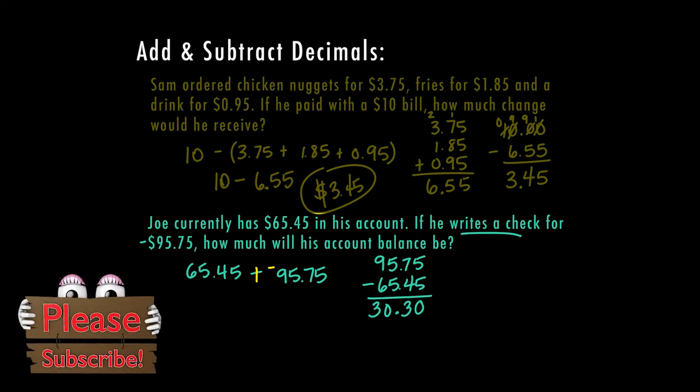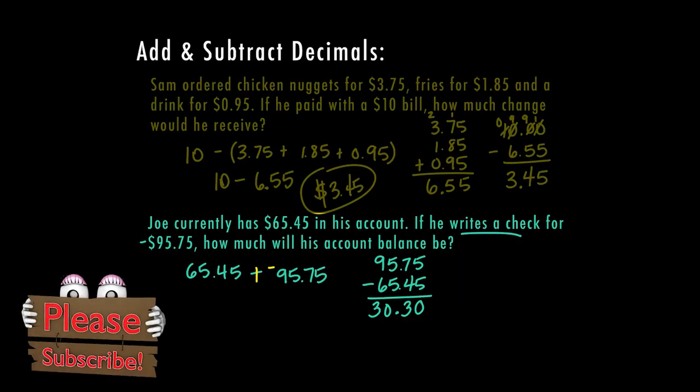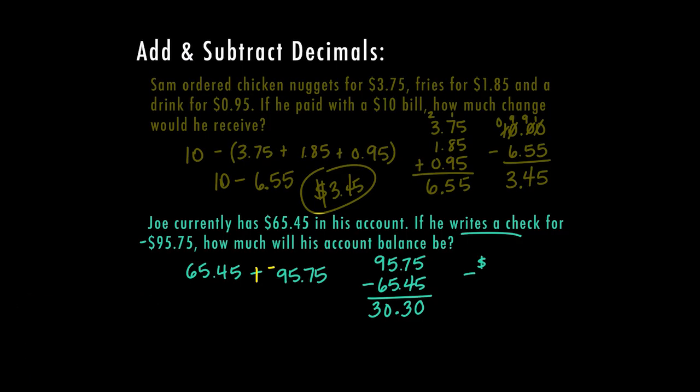So that means that Joe is going to have a negative $30.30 balance on his account. In this case, in order to get back to zero, he would need to put $30.30 into his account.